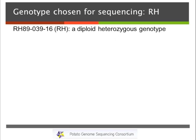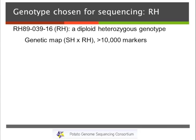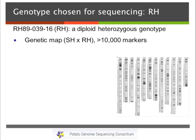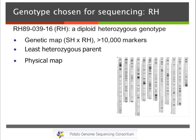Just a little story about how the genome was sequenced. Initially, it was decided to sequence this diploid heterozygous genotype — we'll just call it RH. It's a Dutch genotype. They had made an ultra-dense map with 10,000 markers between SH and RH, published some time ago. RH was considered to be the least heterozygous of the two parents, and a physical map was made by the Dutch group at Wageningen. Sanger sequencing was started.